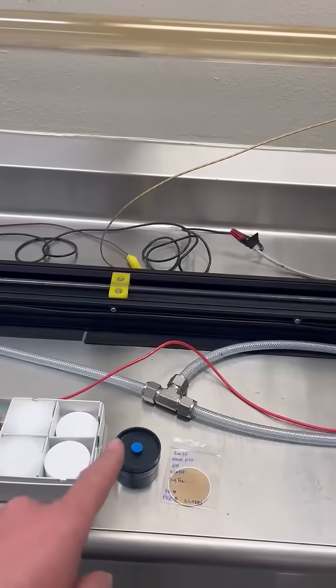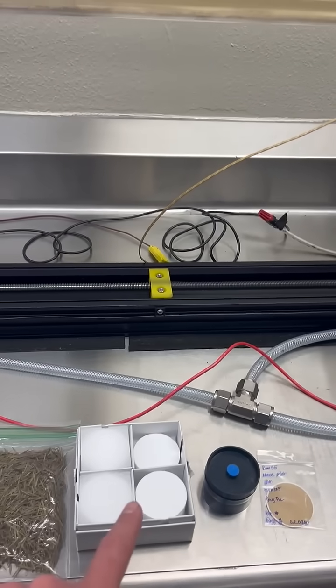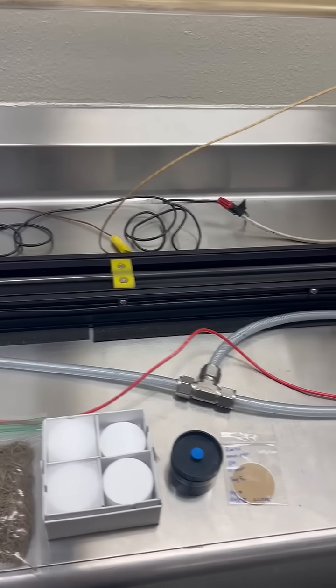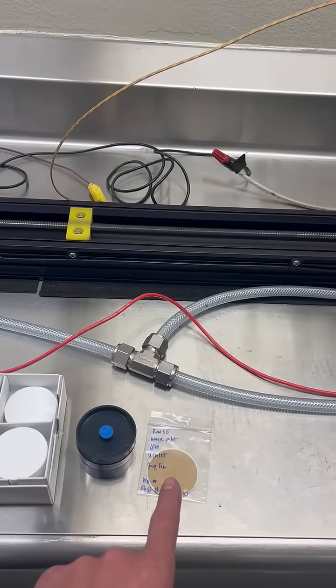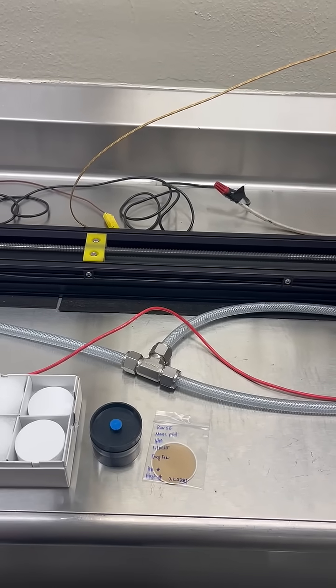Inside that cassette, which looks just like this, we add a pre-weight filter and at the end the filter looks like this, we do a post weight to understand how much smoke we actually produced.